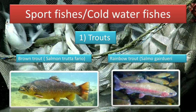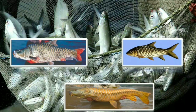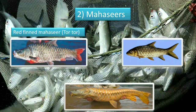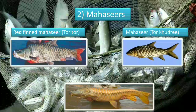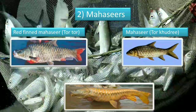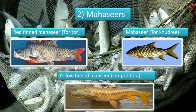Next cold water species is Mahseer. First is red-finned Mahseer, also called Tor tor. Second is Tor khudree. Third is yellow-finned Mahseer, also called golden Mahseer — Tor putitora. Due to its golden color it is called golden Mahseer, and the red-finned Mahseer is named for its red fins.